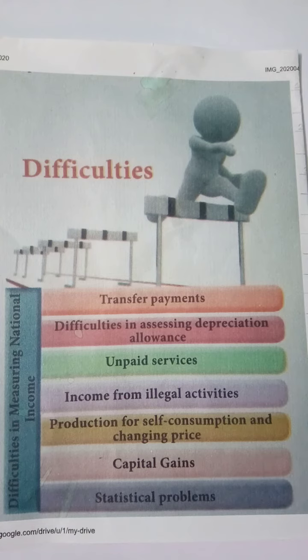Next is income from illegal activities. Income earned through illegal activities such as gambling and smuggling is not included in national income.